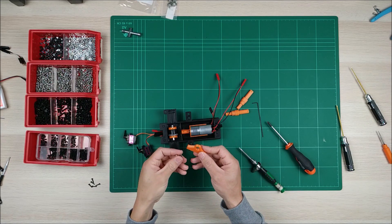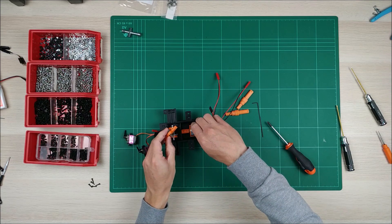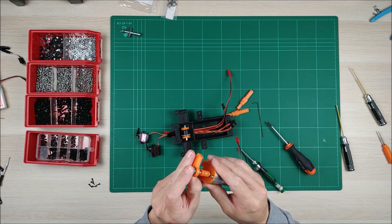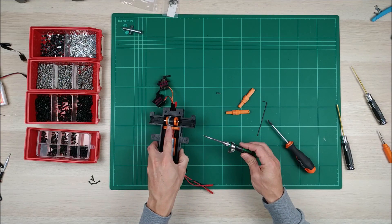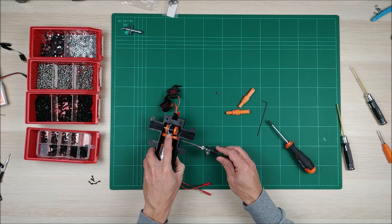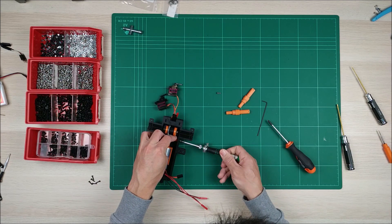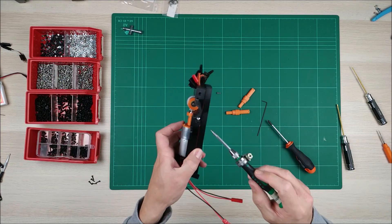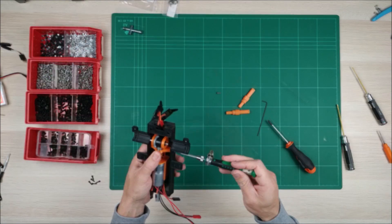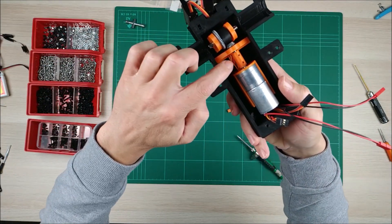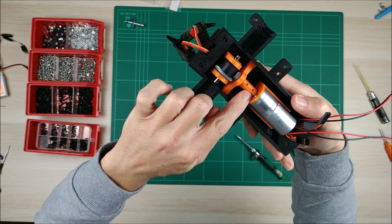And now this is going to be connected like that. I'm going to use M3 eight millimeters long. We're going to put this and also this one. M3, as you can see here, there are two different holes. One for the gear itself and one for the motor.